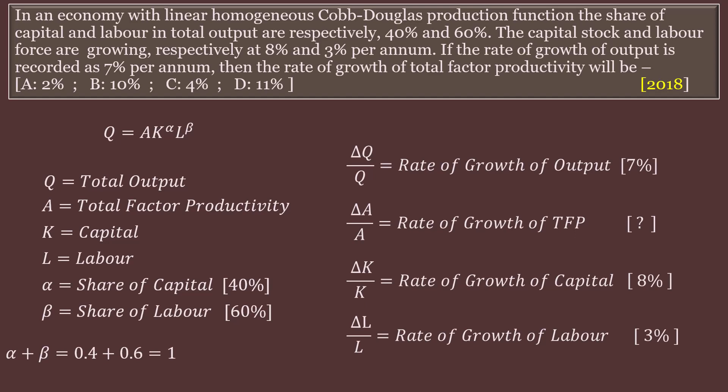This is important and needs an elaborate discussion. First, let us understand what the Cobb-Douglas production function is. Q equals A into K to the power alpha, L to the power beta.